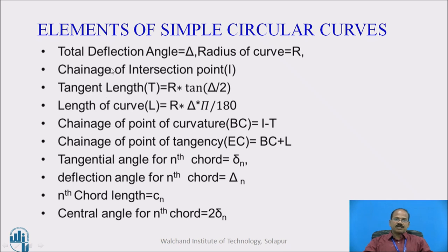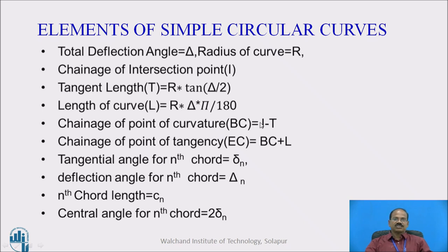Here are the elements of the simple circular curve presented for our derivation. The total deflection angle is delta, radius of curve is R, chainage of intersection point is I, tangent length is R tan(delta/2), and length of the curve is R·delta·pi/180. Chainage of the point of curvature is derived by deducting the tangent length from the chainage of I, and chainage of the point of tangency is derived by adding the curve length to the chainage of the point of curvature.